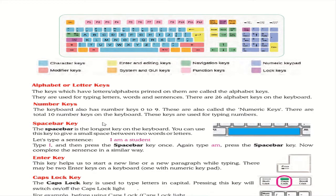The Space Bar is the longest key on the keyboard. You use it to give a small space between two words or letters. For example, typing 'I am a student': type I, then press Space Bar once, then m, then Space Bar once, then a, then Space Bar, then student. If you want one space, click once; if you want two spaces, click twice.